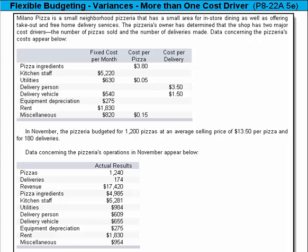Let's take a look at this flexible budgeting problem that has more than one cost driver. Milano Pizza is a small neighborhood pizzeria that has a small area for in-store dining as well as offering takeout and free home delivery services. The pizzeria's owner has determined that the shop has two major cost drivers: the number of pizzas sold and the number of deliveries made.